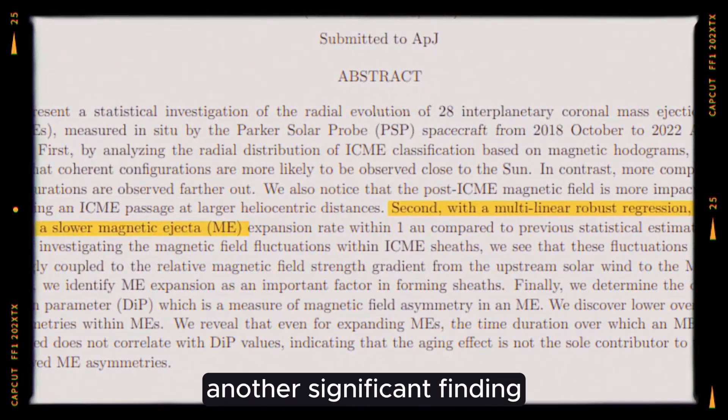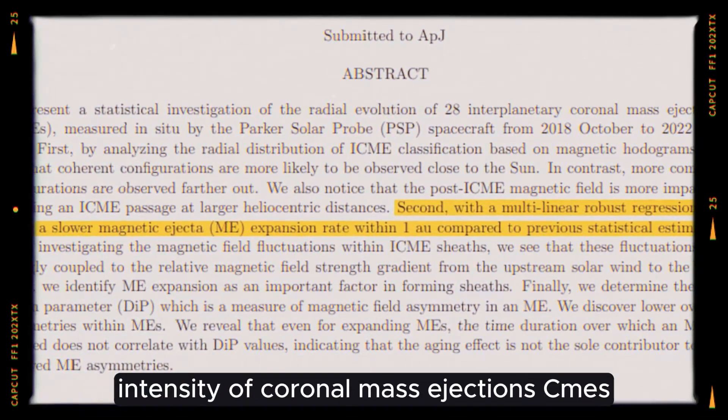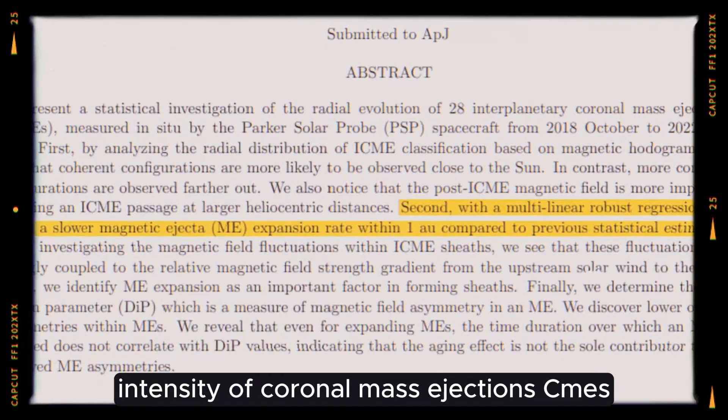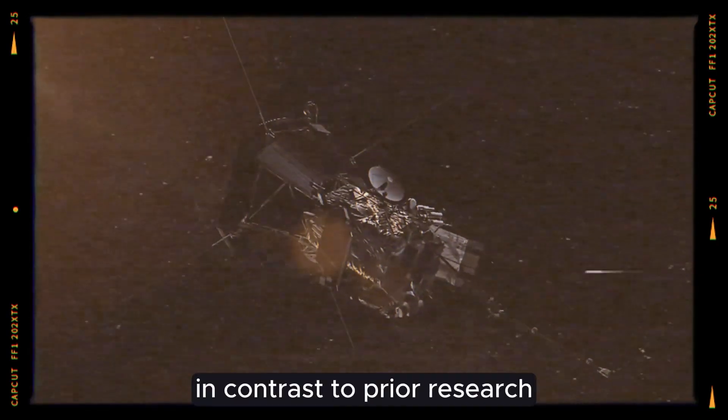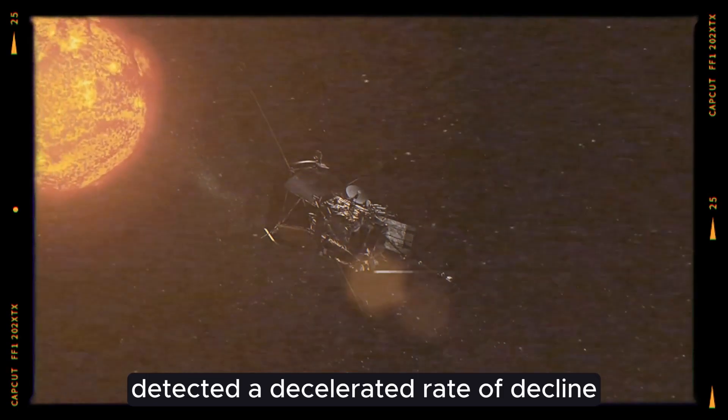Another significant finding pertains to the rate of decline in the magnetic field intensity of coronal mass ejections, CMEs. In contrast to prior research, the Parker Solar Probe detected a decelerated rate of decline,